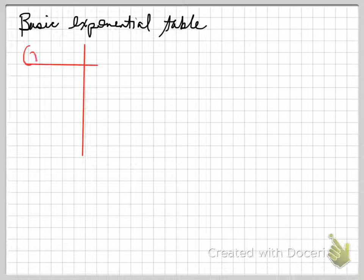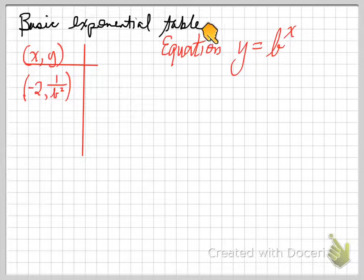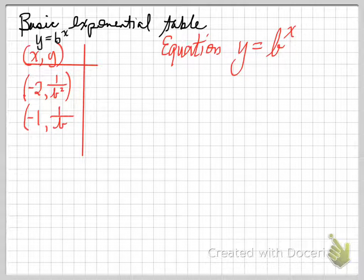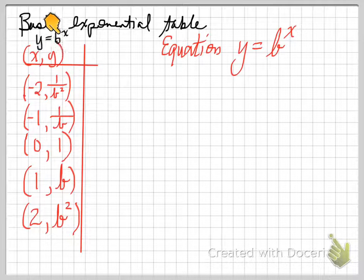If a basic exponential table is as follows — a basic equation looks like this: y equals b to the x. This is your basic equation, and all exponential equations start off looking like this. You would write that equation at the very top of the table. Then you choose the x values: negative 2, negative 1, 0, 1, and 2. These will always be your x values for the basic exponential function.